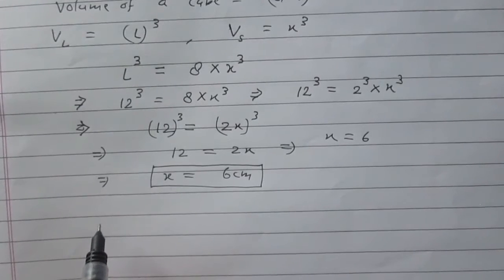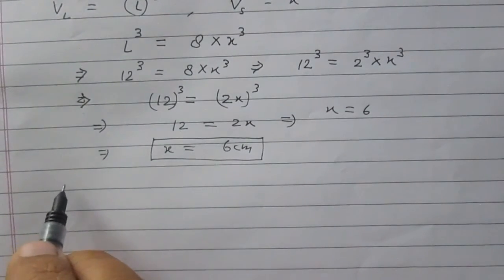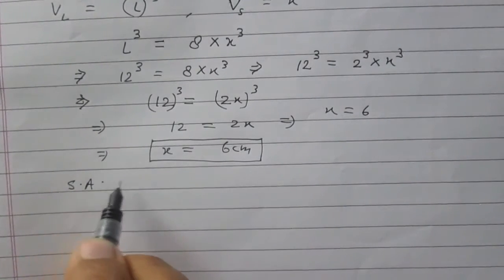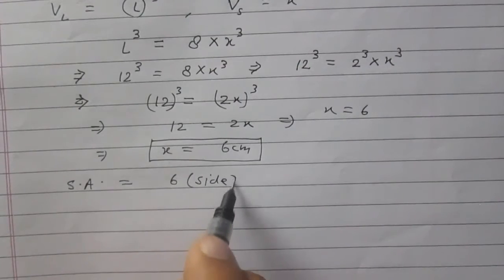Now, we are to find the ratio between their surface areas. According to the formula, surface area of a cube is 6 times its square of the side.